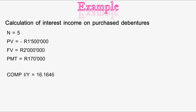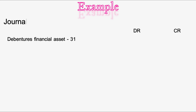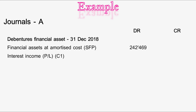Please ensure that either your PV or FV has a negative sign in front of the amount, otherwise there will be an error in calculating it. The interest income is: 1.5 million × 16.1646% = 242,469 rand. Journal entry — 31 December 2018: Financial Assets at Amortized Cost (Statement of Financial Position) — debit 242,469 rand; Interest Income (Profit or Loss) — credit 242,469 rand. This recognizes the interest income.